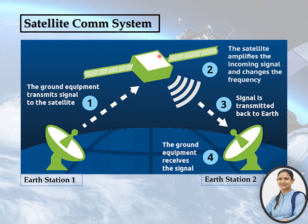The satellite changes the frequency and transmits the signal back towards space, where Earth Station 2 receives the data.